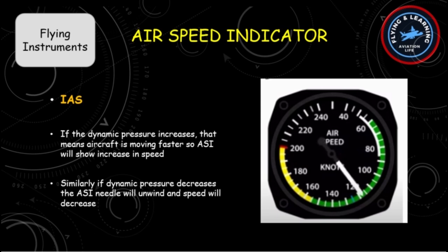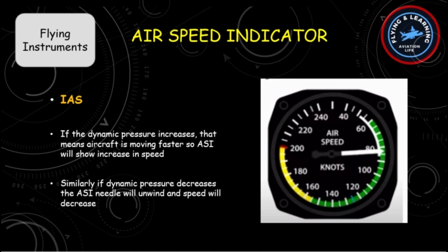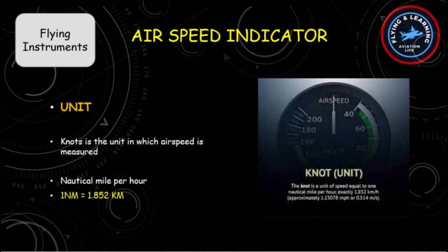Similarly, if dynamic pressure decreases, the ASI needle will unwind and speed will decrease. The speed which the ASI depicts is called indicated airspeed. Knots is the unit in which aircraft speed is measured. Knots means nautical miles per hour, and one nautical mile is equal to 1.852 km.